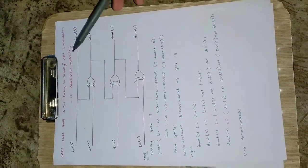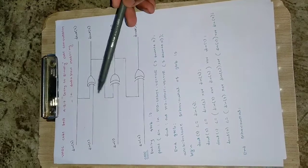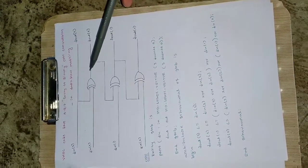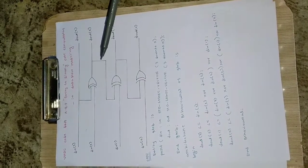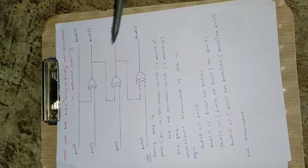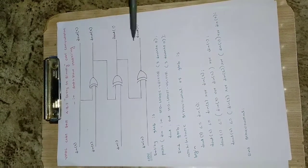So this is the circuit where D in of 3, D in of 2, D in of 1 and D in of 0 are the inputs and they are passed through some XOR gates. Some output is taken as input again and we will be getting the binary code here. This is the gray code and this will be the binary code.